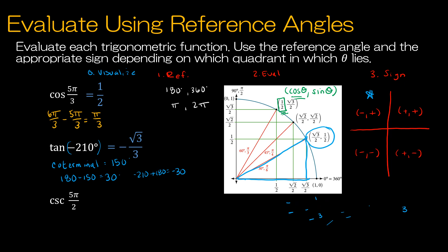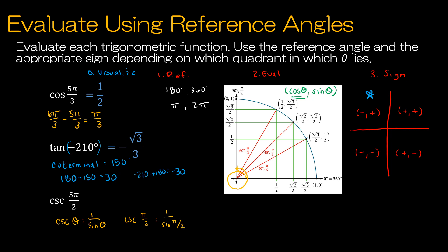For cosecant of 5π/2: this won't form a triangle. Counting: π/2, 2π/2, 3π/2, 4π/2, 5π/2 — the coterminal angle is π/2. Cosecant of π/2 equals 1 over sine of π/2. Sine is the y value, which is 1, so this is 1/1 = 1. No sign adjustment needed since we used the coterminal angle directly.